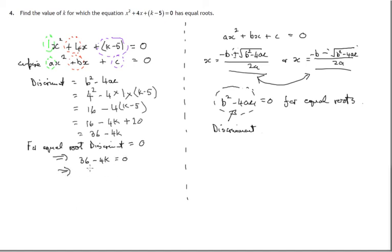So let's add 4k to both sides, and let's divide both sides by 4. K is equal to 9. Find the value of k for which that equation has equal roots. The value of k is 9.